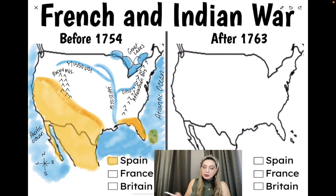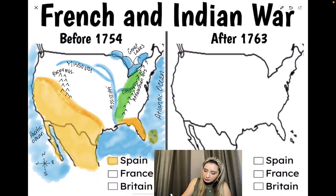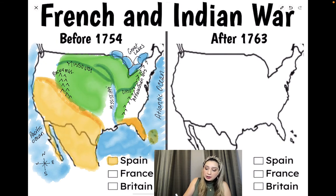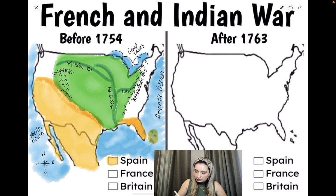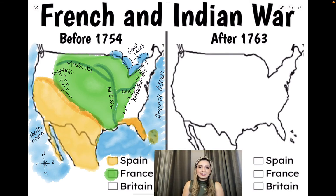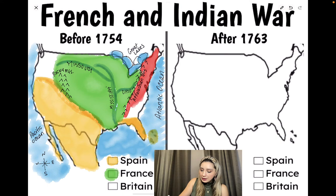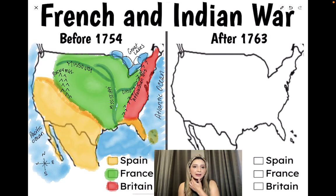Let's continue with France. I'm going to use green for France. They went from west of the Appalachian Mountains around the Great Lakes area. They settled that area because of the abundant natural resources. Now for British land claims — these are your original 13 colonies, stretching from east of the Appalachian Mountains all the way to the Atlantic coast. This is what North America looked like before the war started — before that fighting for the Ohio River Valley began.